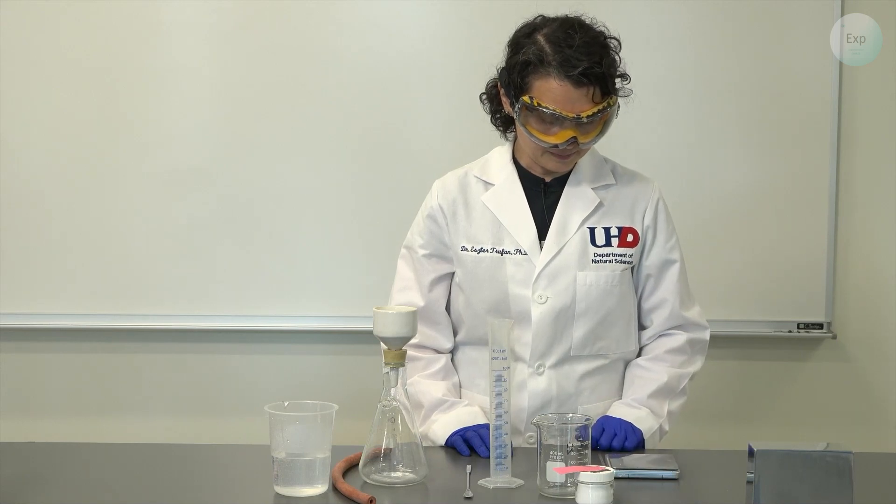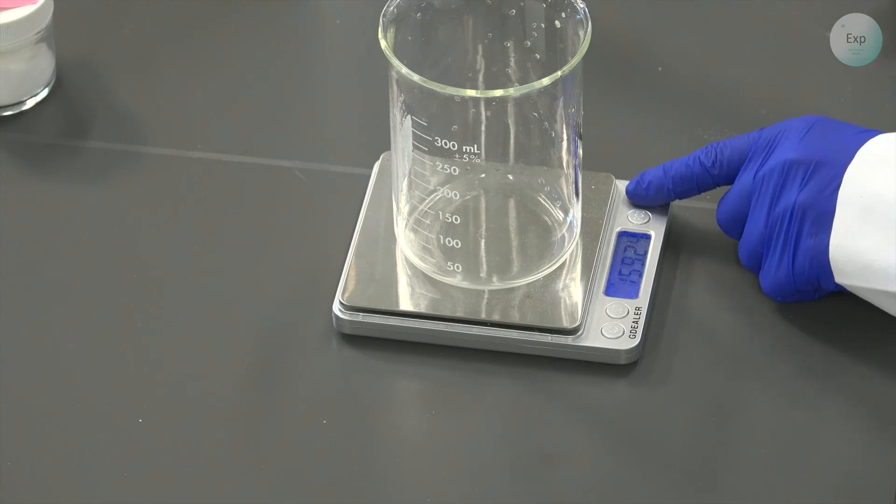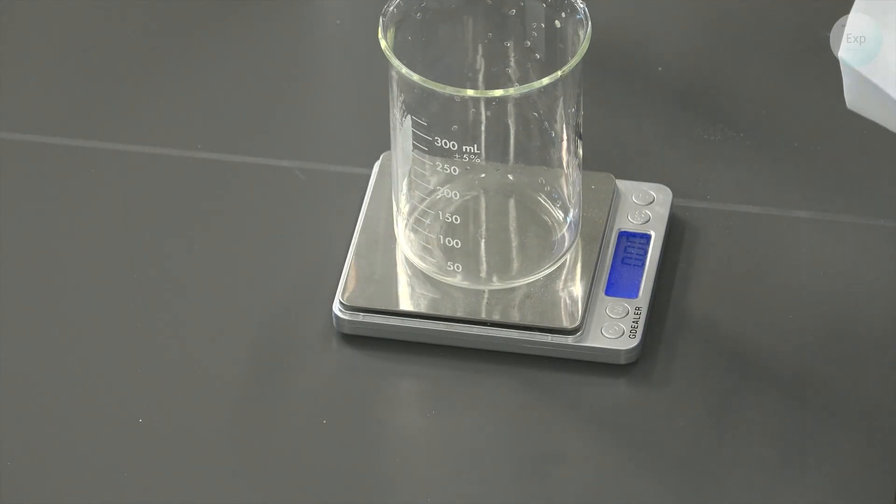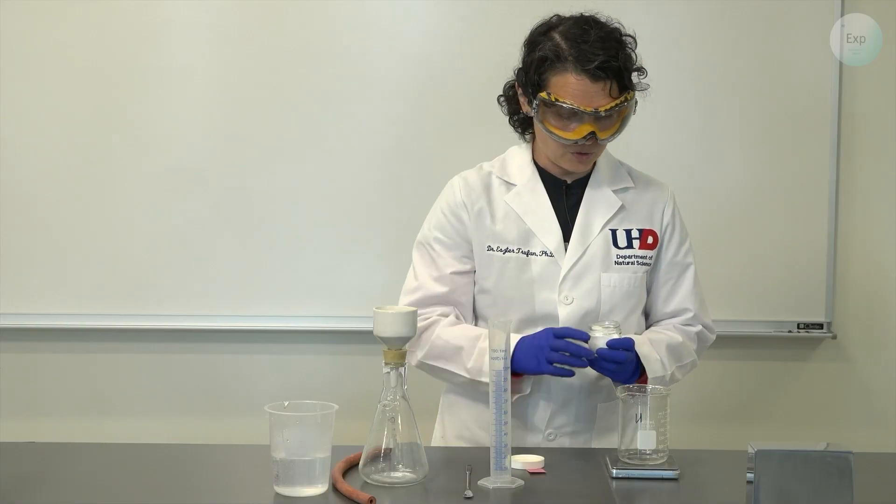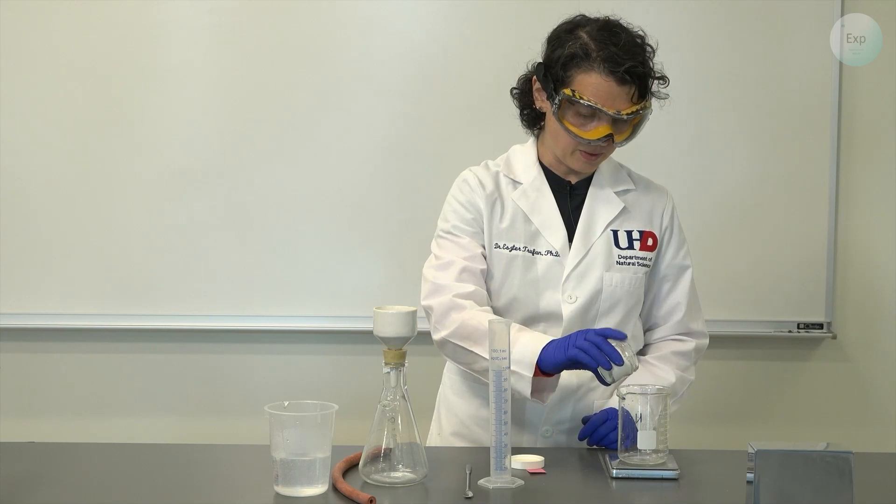The first thing we do is turn on our scale, place our beaker on top of it, tare, and now we're going to add 50 grams of alum to our beaker. It's a large amount so I can skip the spatula for the moment.